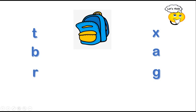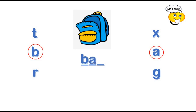Look at this one. The first letter is missing. Okay, where are the letters? Which letters are missing? B is the first one. What's the second one? Let's think. Remember. Yes, A is coming. And the last one is G. Look at the picture, read the word. Bag.